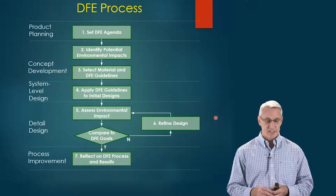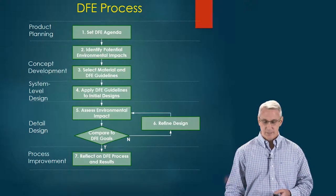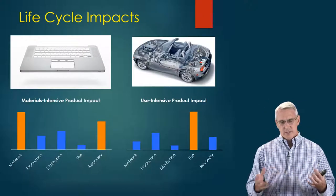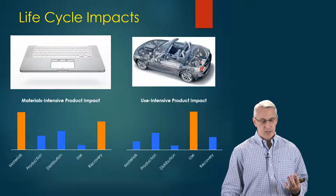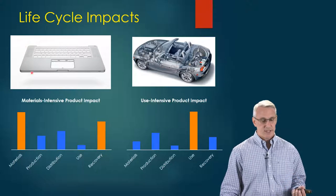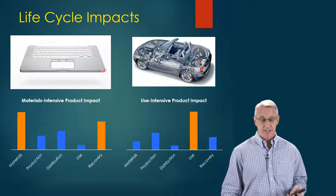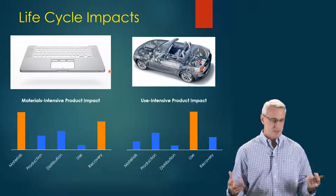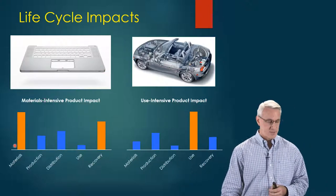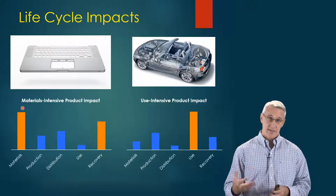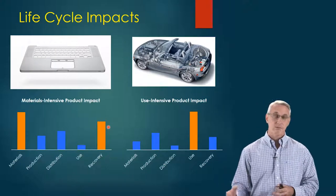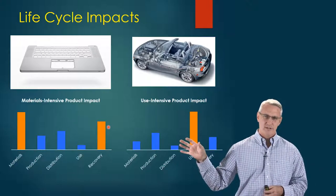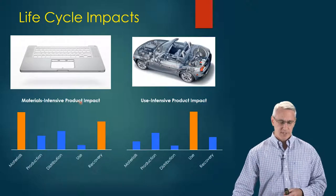Then we reflect on our process and our results once we have our product in production. We can also look at the impacts of life cycles. A materials-intensive product impact is something like a computer — say like an Apple MacBook or a Surface Pro — where we've decided to use aluminum. The materials impact on the environment is really high. However, the recovery might be great in this situation too. How effectively we can recover those materials and keep them in the production life cycle — not letting them go into the bio life cycle — really affects what we can do.